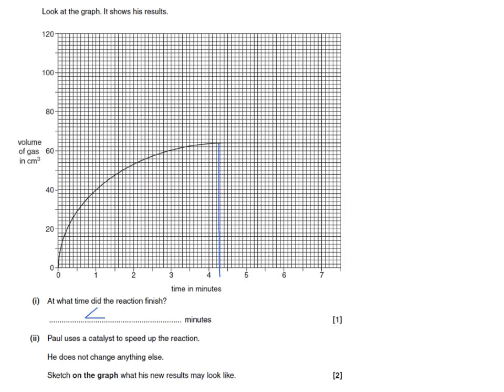Reading down, that looks like 4.3 minutes, give or take. Then he uses a catalyst to speed up the reaction, not changing anything else. So the reaction will be faster — a steeper graph — but it will still level out at the same volume of gas.